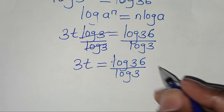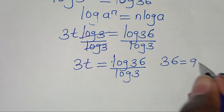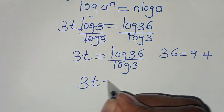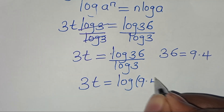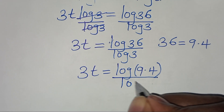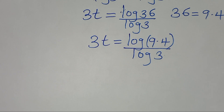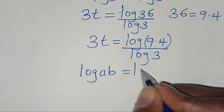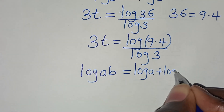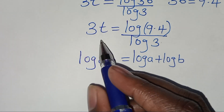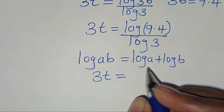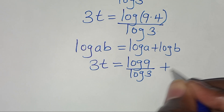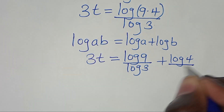The next step is that we can express 36 as 9 times 4. Substituting this, we have 3t is equal to log of 9 times 4, everything divided by log 3. Now log of 9 times 4 is in the form of log A times B, which we can express as log A plus log B. Applying this log product property, then we have 3t equal to log 9 divided by log 3, plus log 4 divided by log 3.